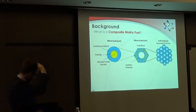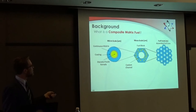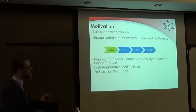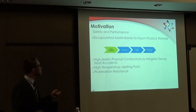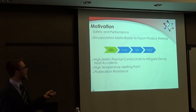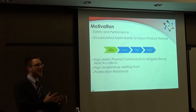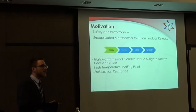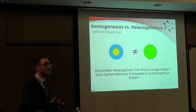Taking off my neutron hat, let's talk about composite matrix fuels. Composite matrix fuels are basically a uranium fissile fuel kernel embedded in some kind of continuous matrix — and you might make a fuel block or a full core out of it. I'm calling this the micro scale; the meso scale is a fuel block; and the full scale is the full core. A lot of people in the past have studied these fuels and really like them, especially for encapsulation — the continuous matrix adds another barrier so that nasty fission products stay in the fuel. They also like them for high burn-up capability, thermal conductivity of the matrix, and proliferation resistance.